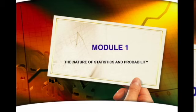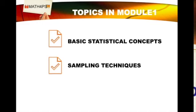Welcome to Module 1 of this course. Module 1 is about the nature of statistics and probability. There are two topics discussed in this module: the first is basic statistical concepts, and the second section covers the different types of sampling techniques.